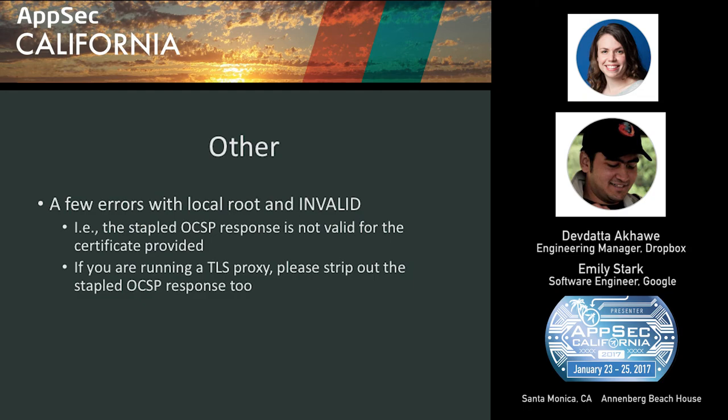There were a few other errors: we saw cases where the certificate was a local root — a TLS proxy — but the OCSP response status was invalid, meaning the stapled OCSP response wasn't valid and it was a local root. If you're running a TLS proxy and man-in-the-middling TLS, please throw away the OCSP response we are stapling — don't continue passing it along, as it unnecessarily screws up our measurements.